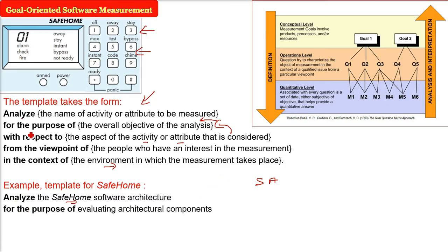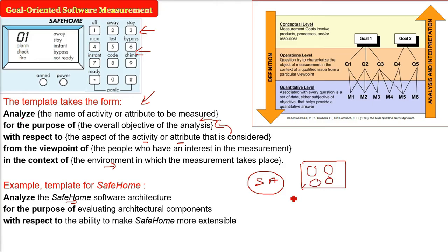What will be the second one? For the purpose of what? We need to evaluate the architectural components. Because we have to answer the overall objective of the analysis. The name of the activity or attribute to be measured is software architecture, and purpose is evaluation of architectural components.